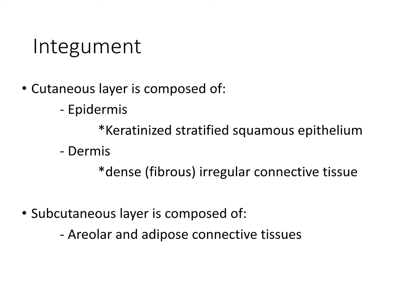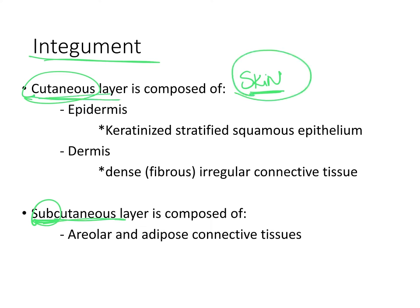So again, the integument has two main layers: the cutaneous layer, also known as skin, and the subcutaneous layer, which is underneath the skin. When we look at the cutaneous layer, we find two layers: the epidermis and the dermis.